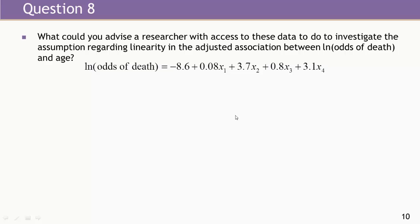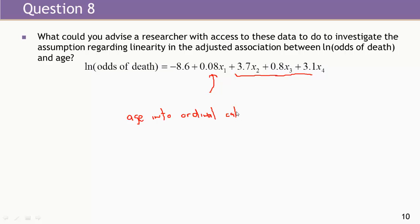What could you advise a researcher to do to investigate the linearity assumption in the adjusted association between log odds of death and age? Because this is an adjusted association, we can't just look at a LOESS scatter plot of log odds versus age unadjusted, since that may differ after adjustment for other factors. One exploratory approach would be to break age into several ordinal categories and refit the regression model, then see if the difference from category to category is in the same direction and similar in magnitude — which would indicate roughly linear behavior on the log odds scale.